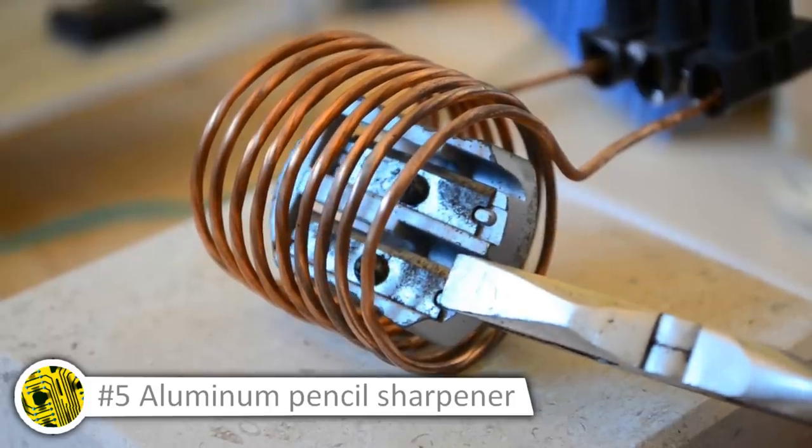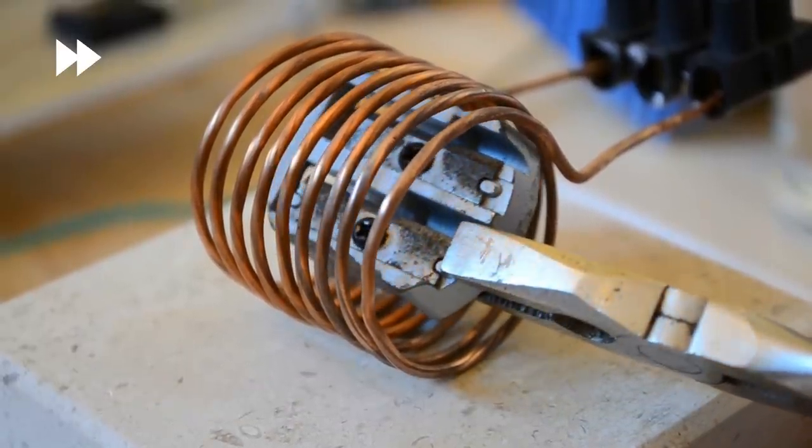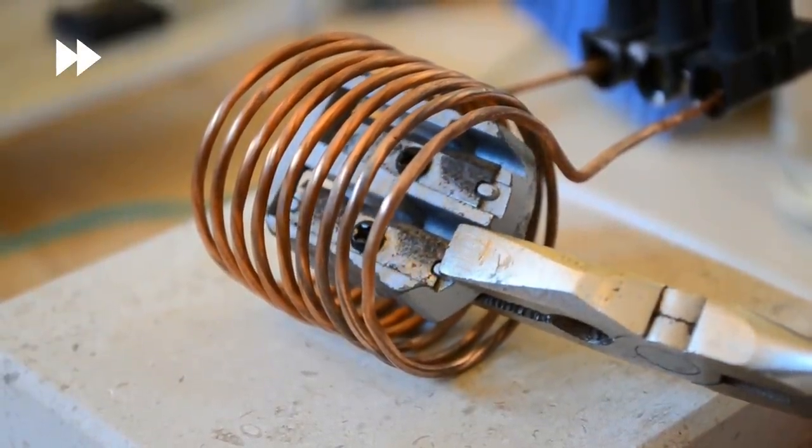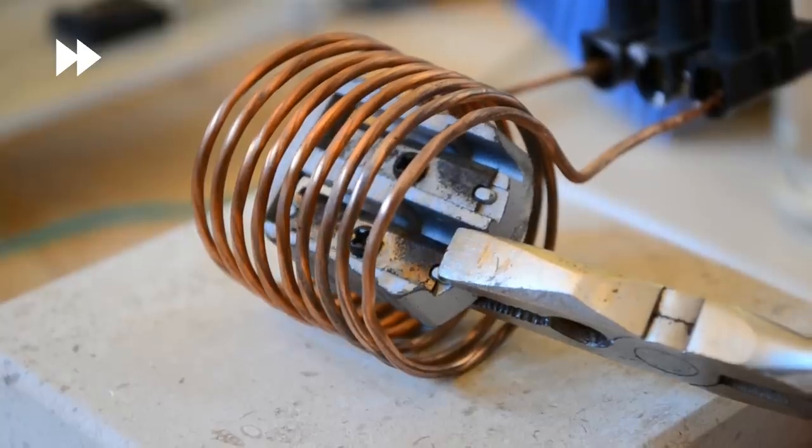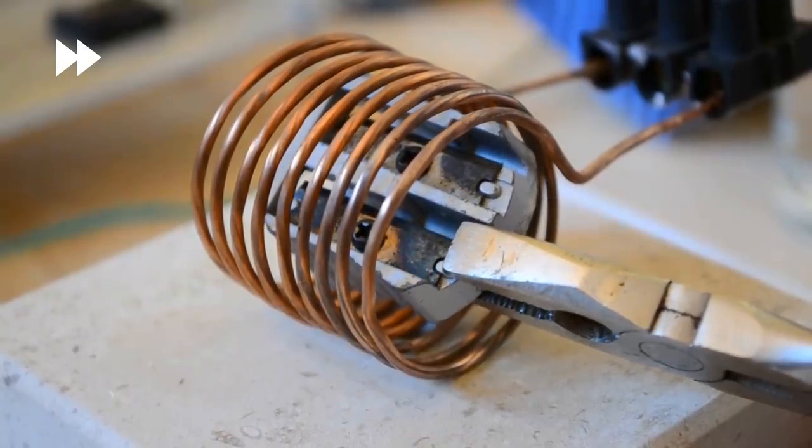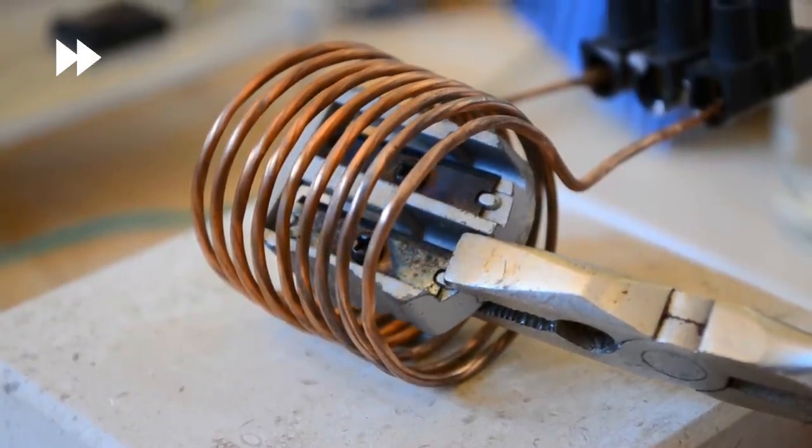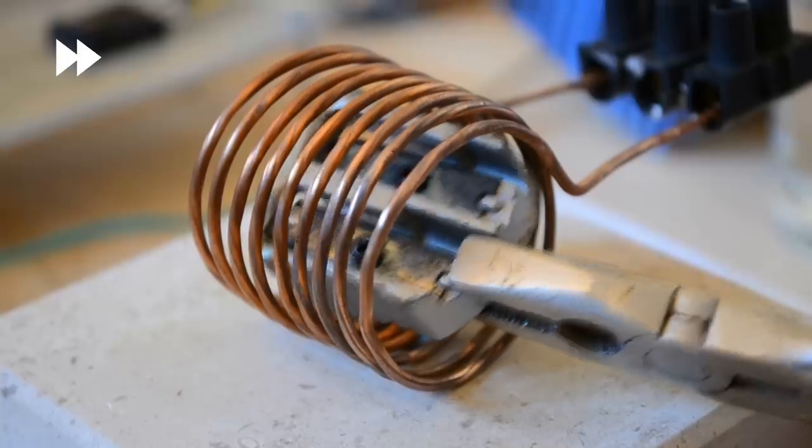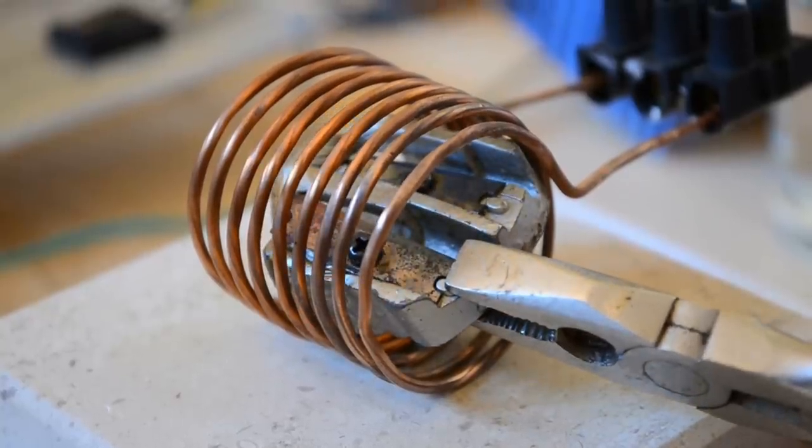Even better, we put an aluminum pencil sharpener in the forge. This metal has a melting point of only 660 degrees. We can expect an interesting reaction. Hmm, it doesn't seem to like it.